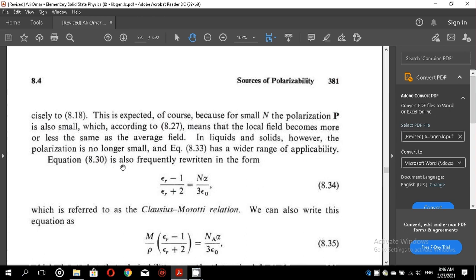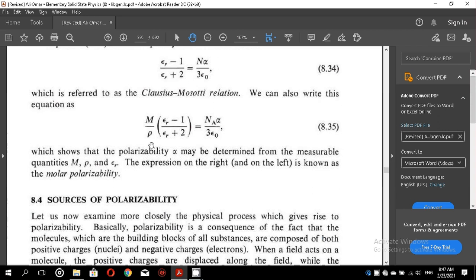Equation 8.30 is frequently rewritten in this form, which is referred to as the Clausius-Mossotti equation. This equation is also very important and you may be asked to derive this equation in the examination. We can also write this equation as M over rho epsilon r minus 1 over epsilon r plus 2 equals n a alpha over 3 epsilon r, which shows that the polarizability alpha may be determined from the measurable quantities M, rho and epsilon r. This equation is useful in the sense that the quantity M can be measured experimentally from this equation.